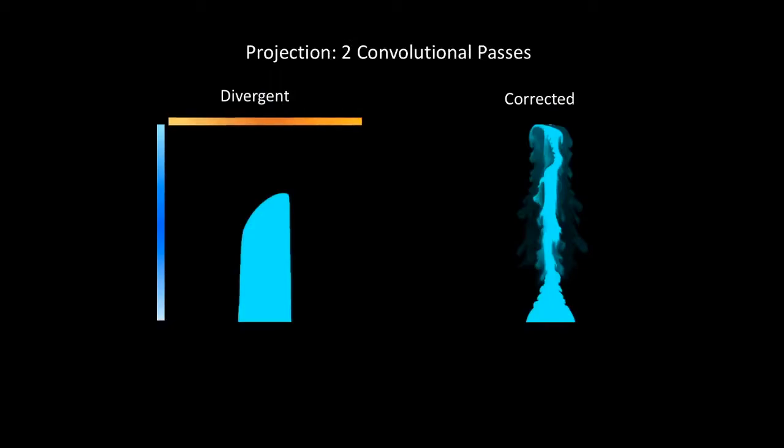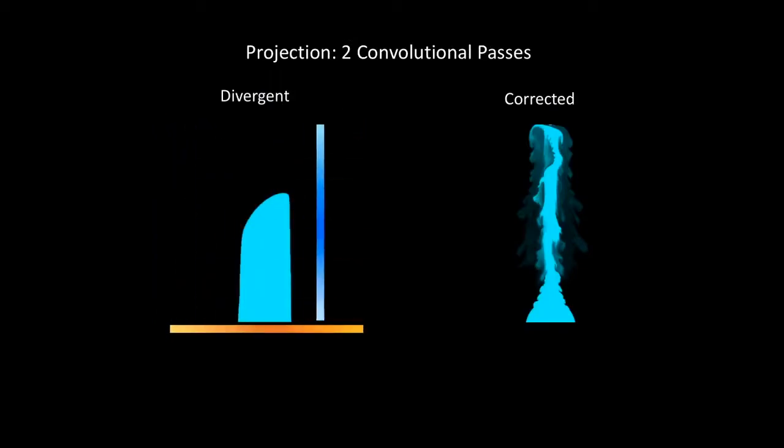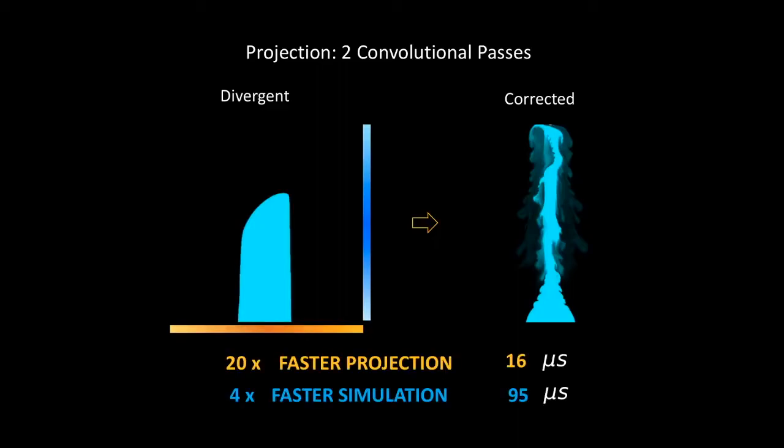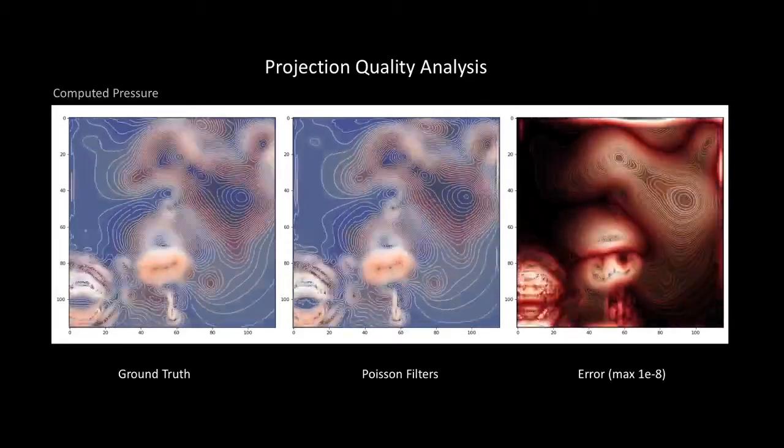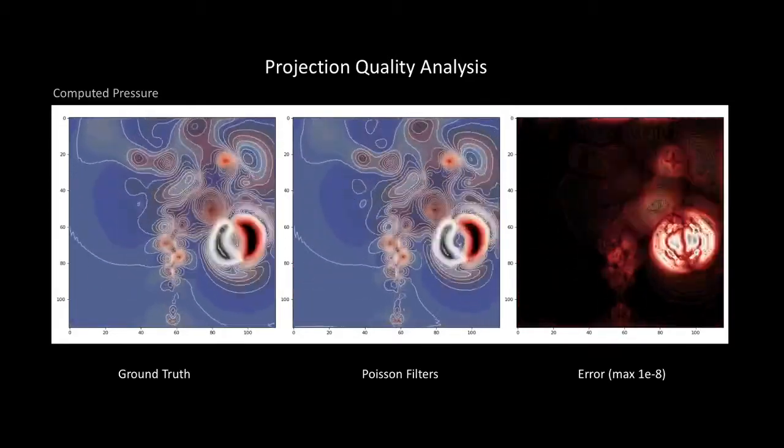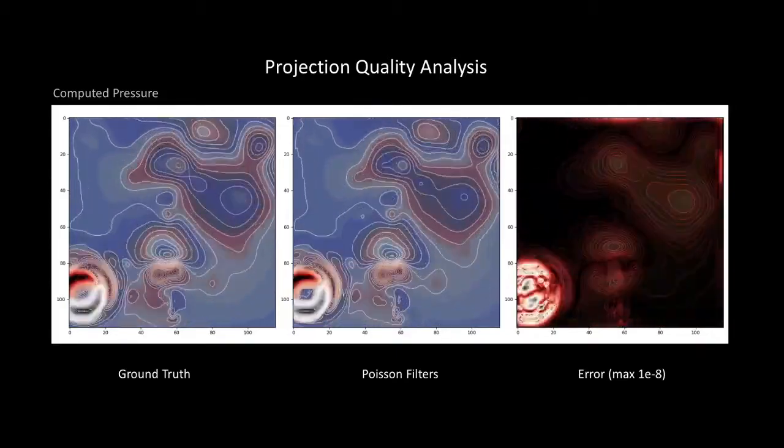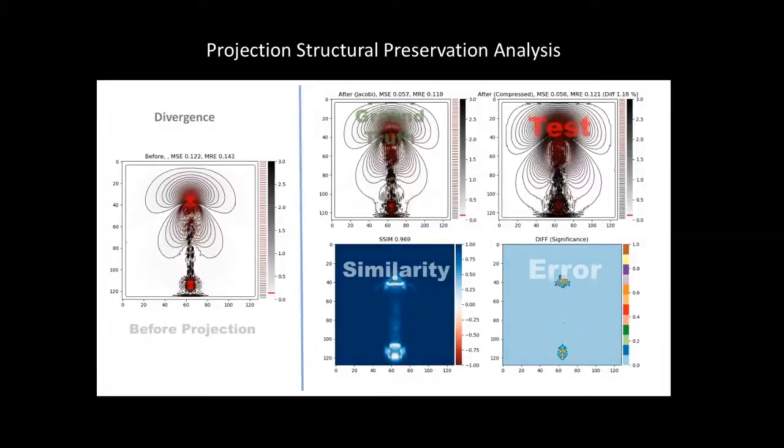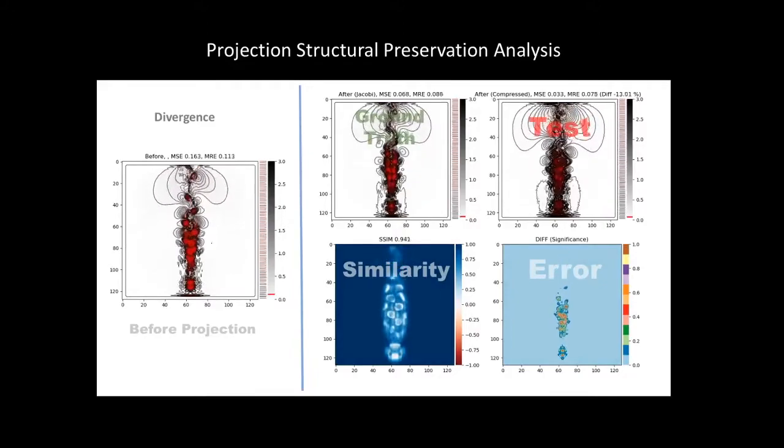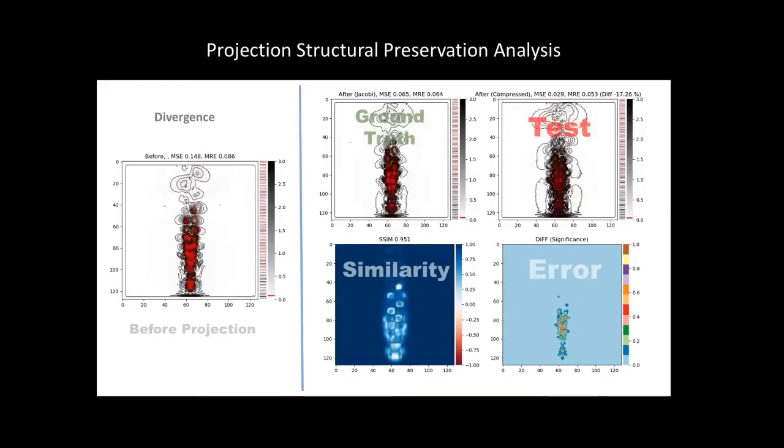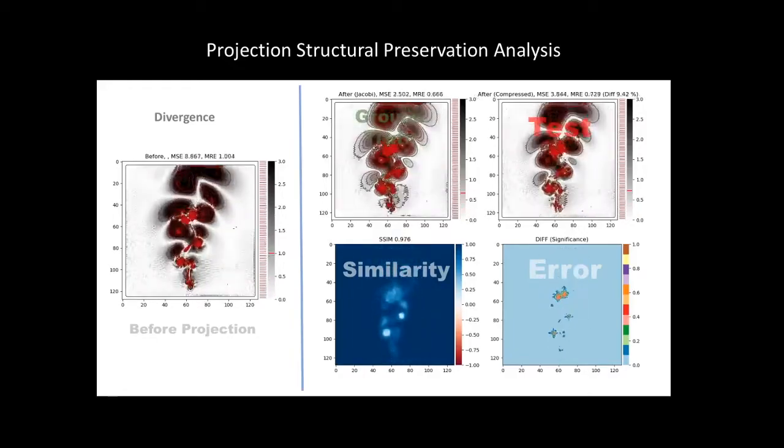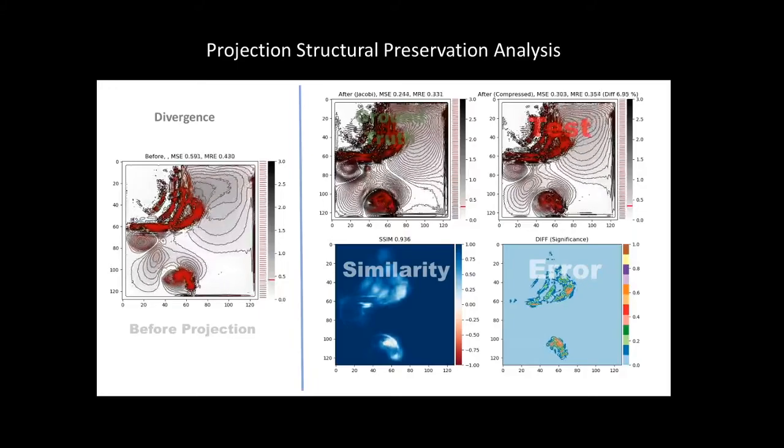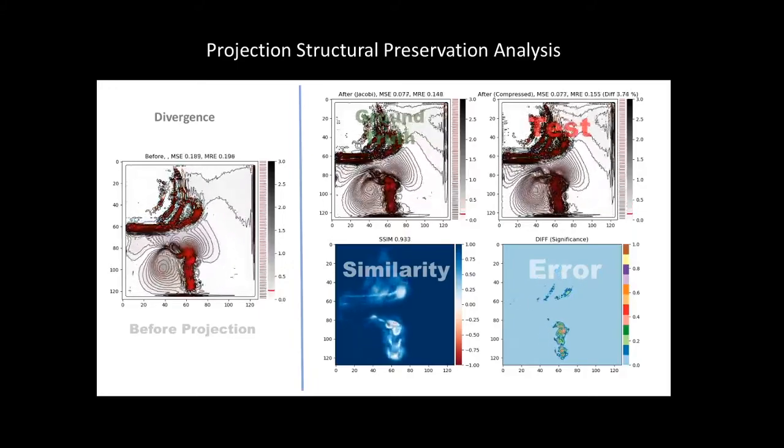We then perform two convolutional passes on the divergence and use the results to correct the velocity. It's a simple code, fast, and there is no CPU involved. Here you can see comparison of the computed pressure to the ground truth, which is the Jacobi solution where the error is quite small. To make sure our method doesn't damage the structural properties of the fluid, we also compare the divergence before and after correction. As you see, the results are closely matched into ground truth. Especially when we look at the SSIM, which is the structural similarity index, we see very little difference between the two.